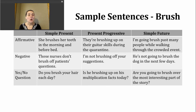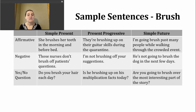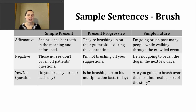In the negative, we use 'do not' and our base verb with the subjects they, we, you, or I, and 'does not' and our base verb for he, she, and it. Example: those nurses don't brush off patients' questions — meaning nurses don't ignore patients' questions. To make a question in the simple present, we begin with 'do' then our subject for I, you, we, or they, or 'does' for he, she, and it. Example: do you brush your hair each day?